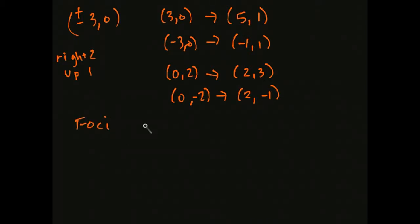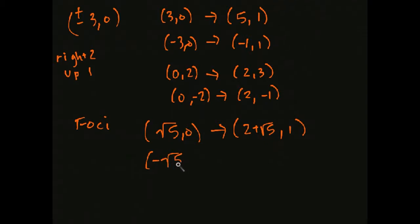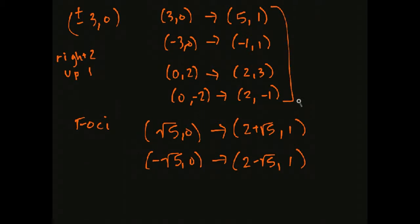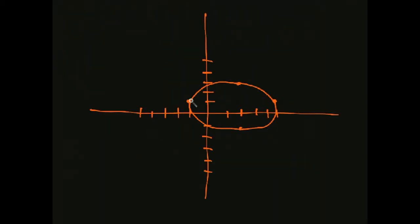The foci: (√5, 0) shifts to (2 + √5, 1), and (−√5, 0) shifts to (2 − √5, 1). I've plotted those points — (5, 1), (−1, 1), (2, 3), and (2, −1) — and there's roughly my ellipse. The scale's a little off, but you can see that we've shifted the center over 2 and up 1.